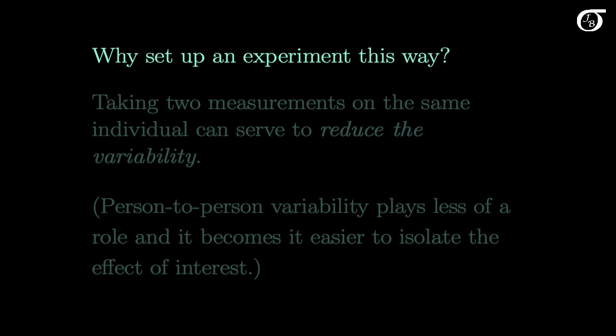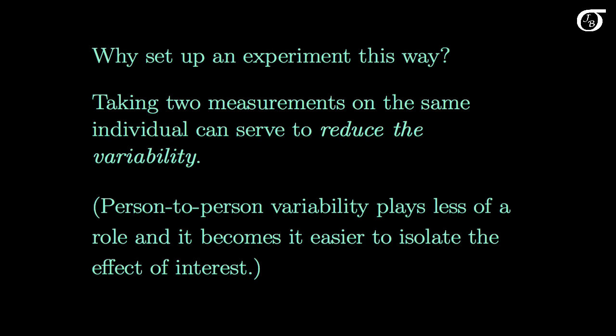Why set up an experiment this way? Taking two measurements on the same individual can serve to reduce the variability. Person-to-person variability plays less of a role, and it becomes easier to isolate the effect of interest, such as the effect of alcohol on reaction times.